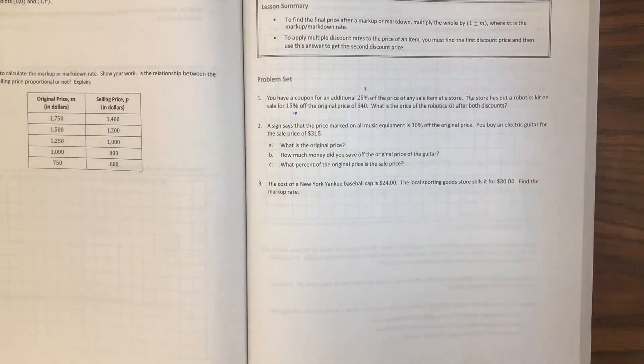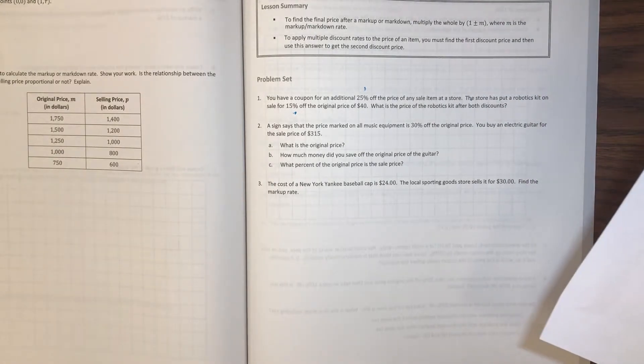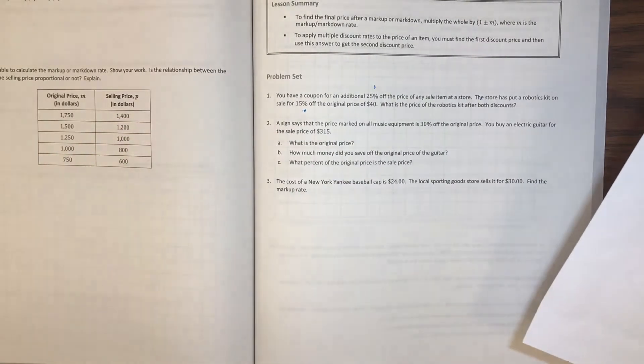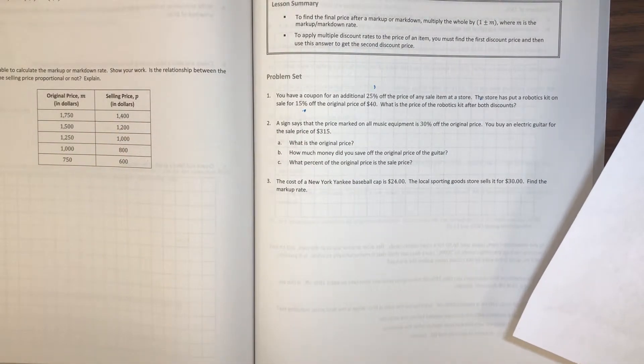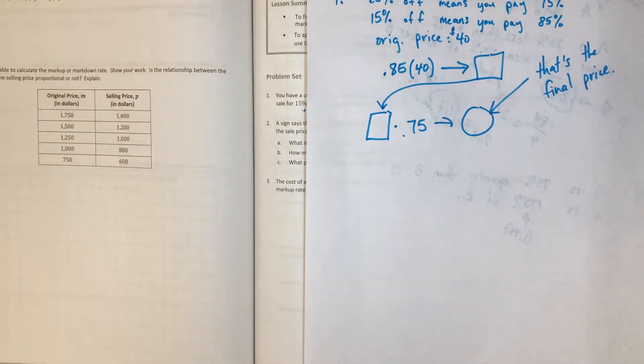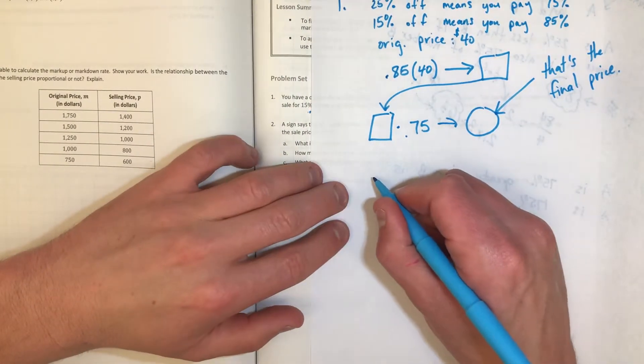The next one, number two, says: A sign says that the price marked on all music equipment is 30% off the original price. You buy an electric guitar for the sale price of $315. What is the original price? Okay, these ones can be kind of tricky because you have a sale price and you have to work back to the original price.